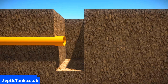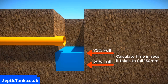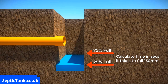The next day, refill the hole once again with water to a depth of at least 300mm, then observe the time in seconds that it takes for the water to seep away from 75% full to 25% full — that's roughly a fall of about 150mm.